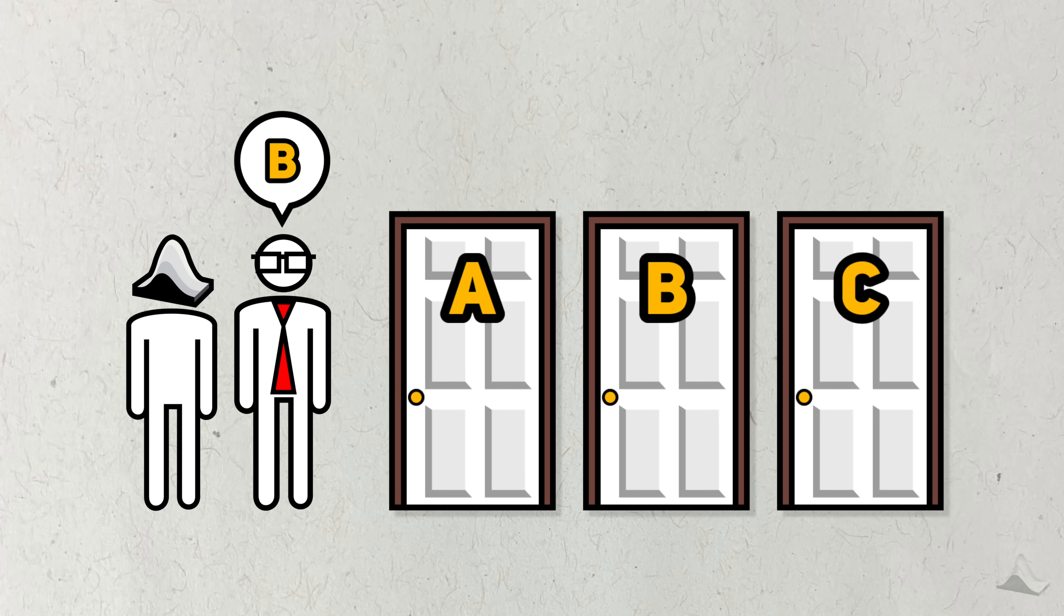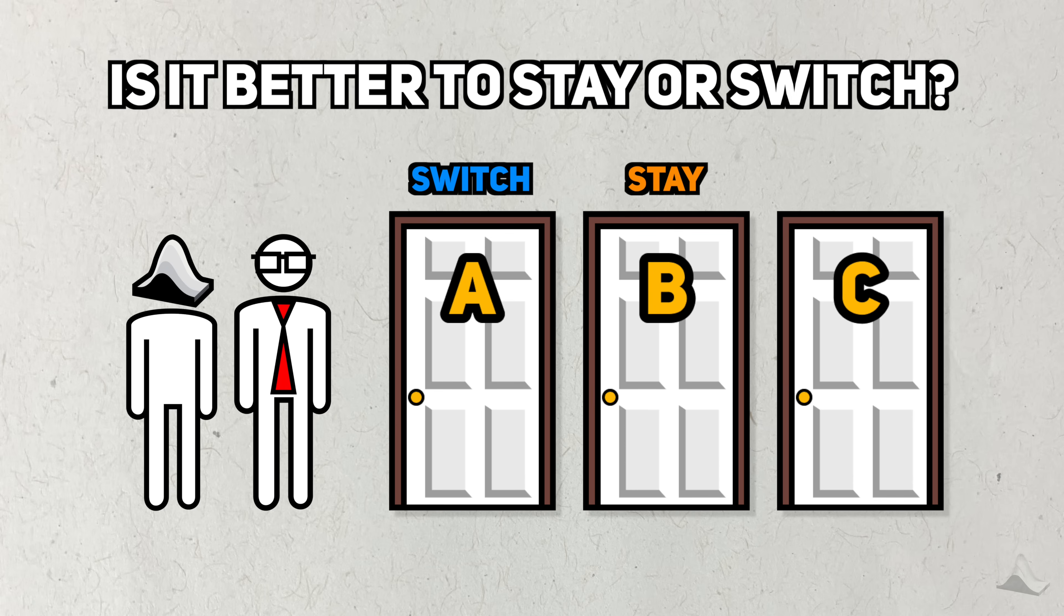The host tells you to pick a door first. Seeing your choice, the host picks another door and tells you that the cash prize isn't behind it. But then the host does something else. After choosing his door, the host offers you a choice. You can switch your choice to the other door that wasn't picked, or you can stay with your first choice. The Monty Hall problem asks, is it better to stay or switch?